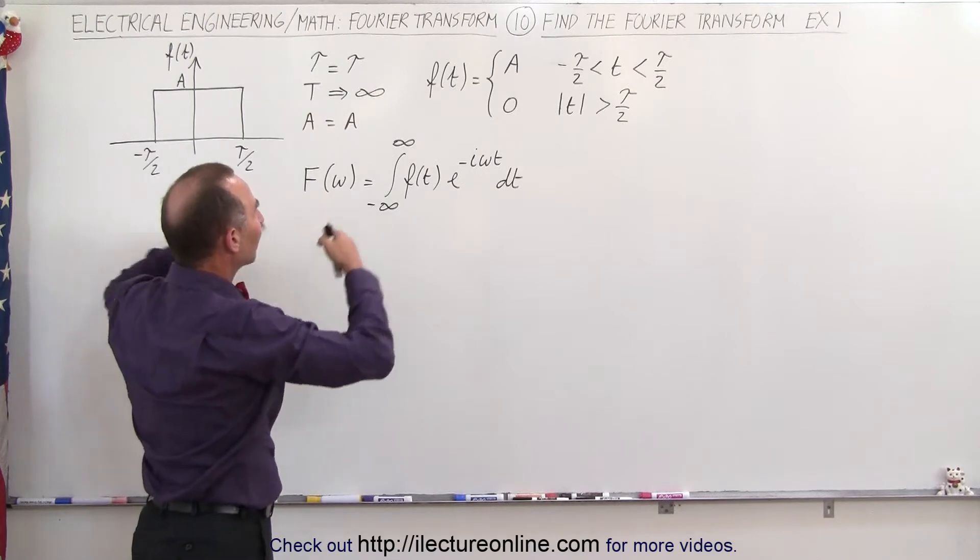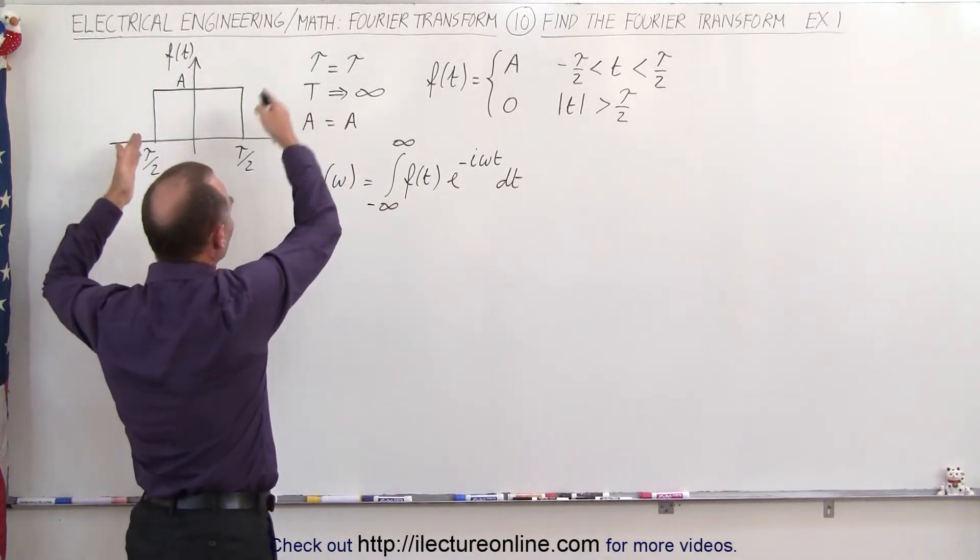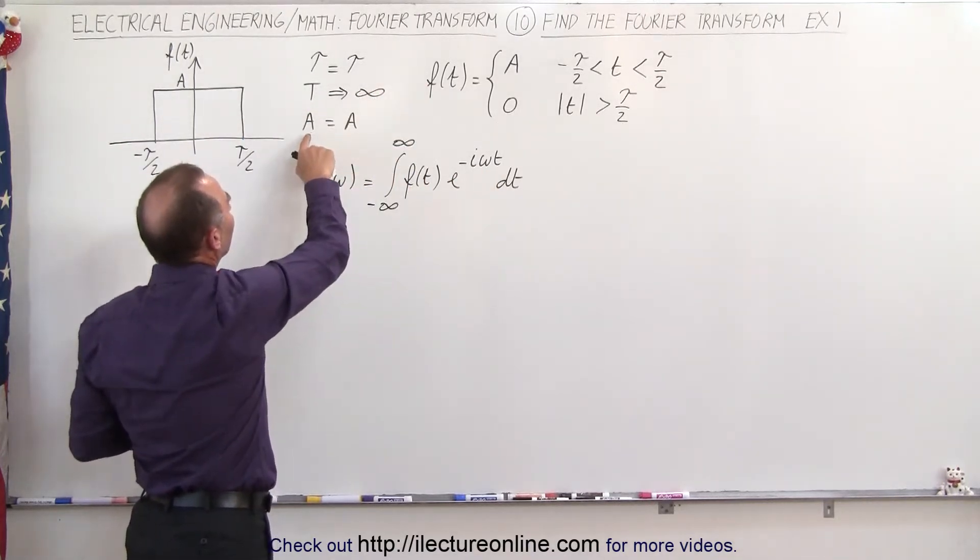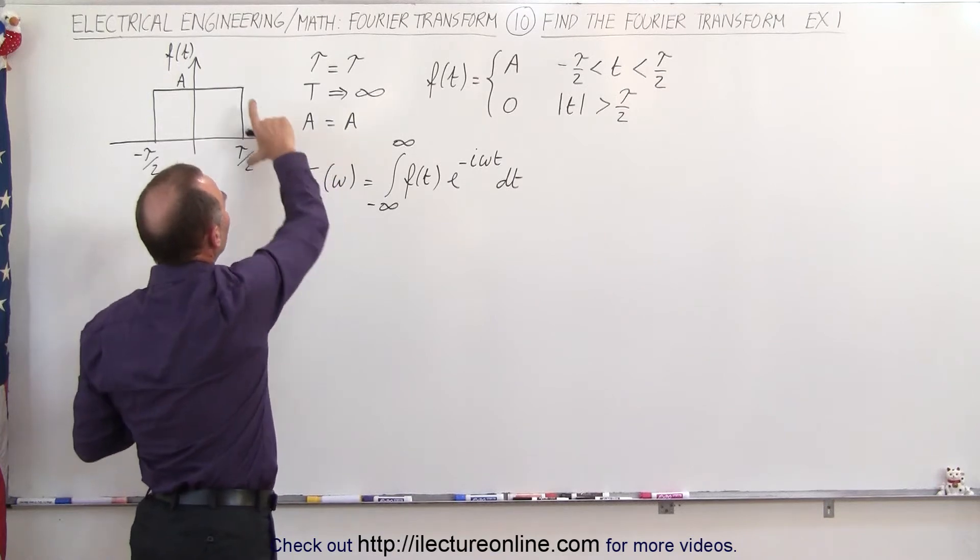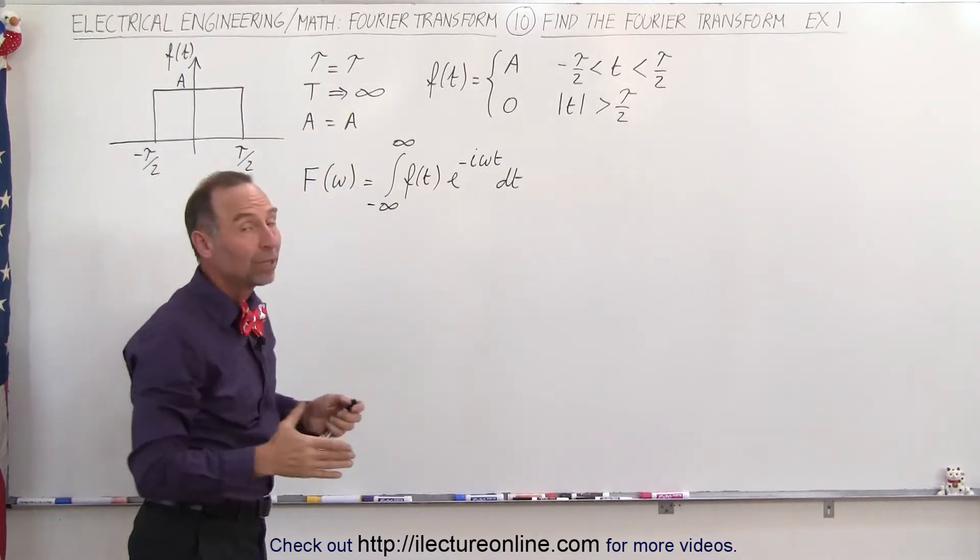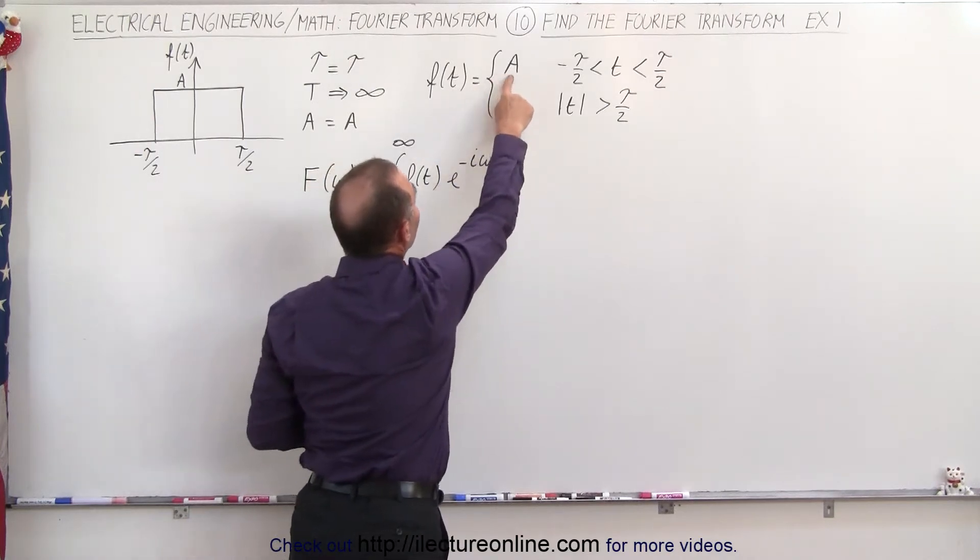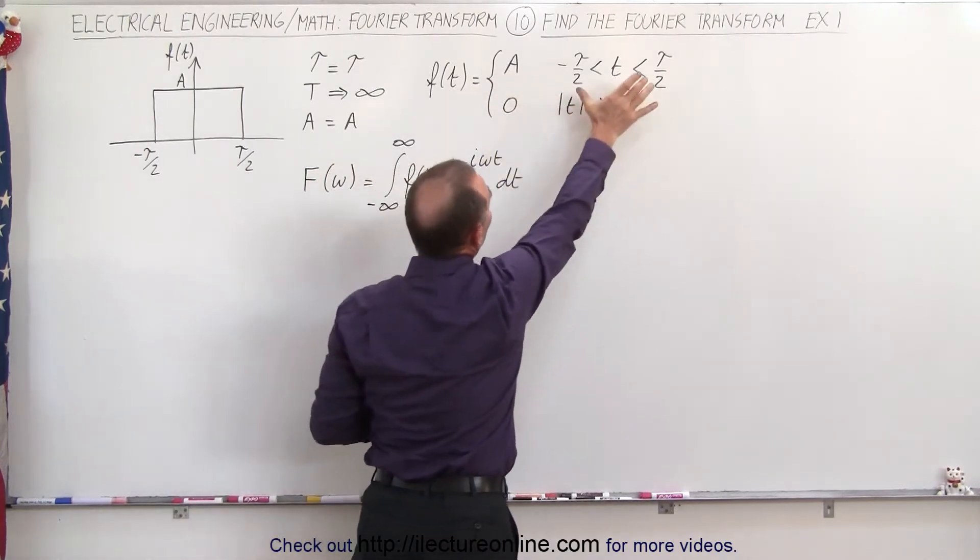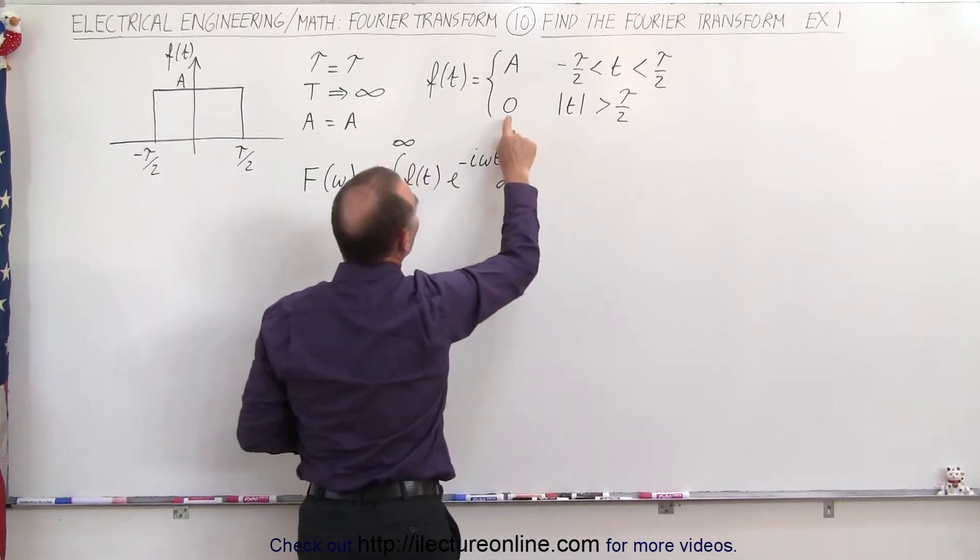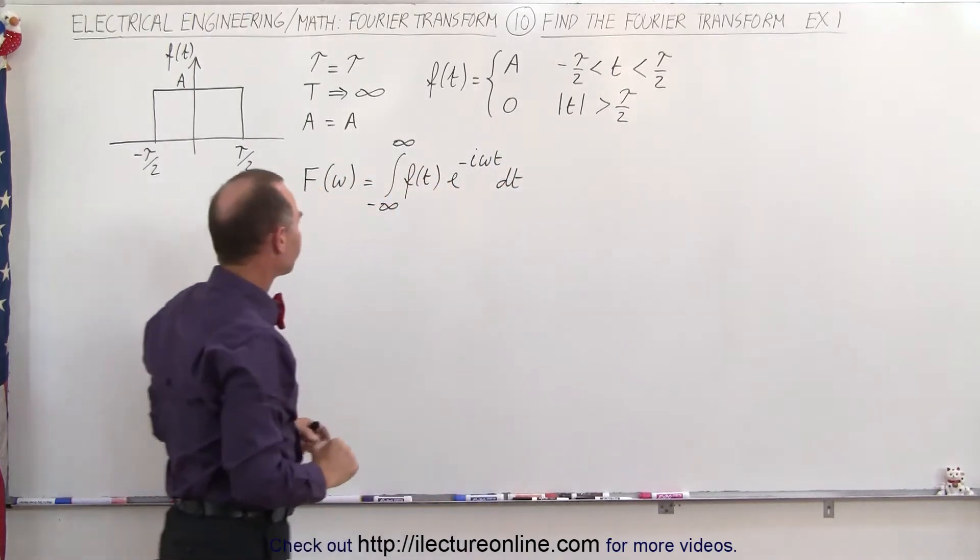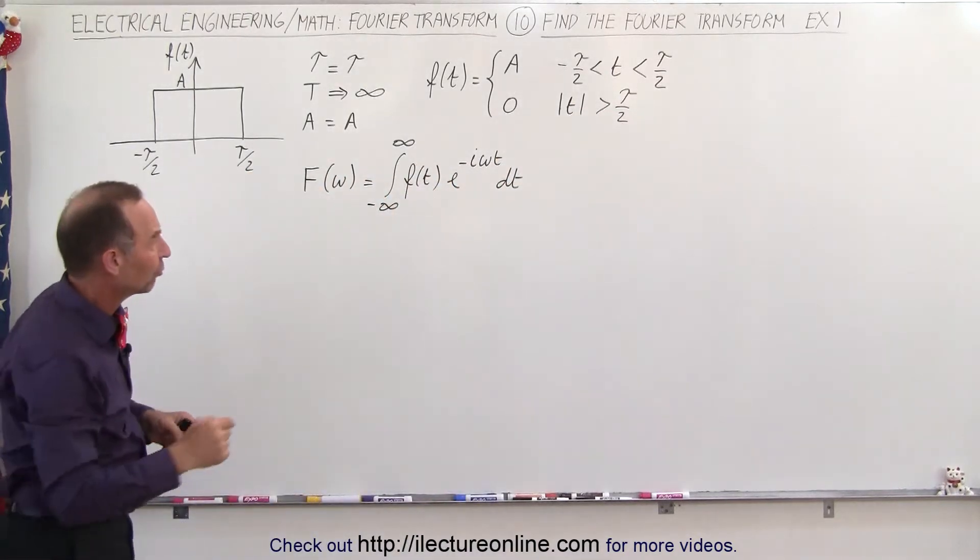The period is infinity because there's only a single pulse—it doesn't repeat—and then the amplitude is equal to A. So we can define the function in the time domain as being equal to the magnitude A, which is a constant between those two values for time, and it's zero everywhere else.